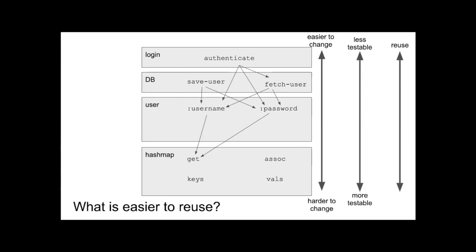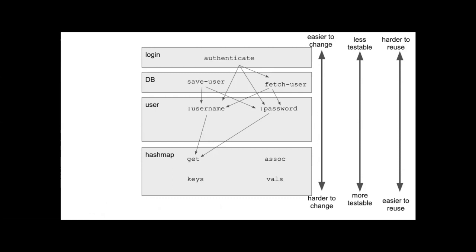What is easier to reuse? I'll argue that stuff at the bottom is easier to reuse — it's more general, and just by virtue of having more arrows pointing to it, it is being reused more, which is an existence proof that it is easier to reuse. It's going to be hard to reuse your authenticate method in somebody else's software — they might have a different representation of users. But if they're using Clojure they're probably using hash maps, and all those things are going to be reusable. Going lower down to language primitives, those are obviously being reused by many companies all around the world.